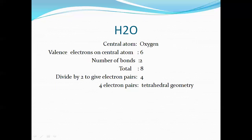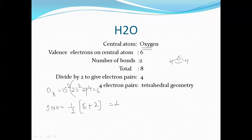When we come to the water molecule, the central atom is oxygen. Applying the formula: oxygen has atomic number 8, electronic configuration 1s², 2s², 2p⁴, so the number of valence electrons is 6. The steric number is half of (6 + 2) = 4, since water has 2 hydrogen atoms attached. Out of these 4 orbitals, 2 are bond pairs — attached to 2 hydrogen atoms — and the other 2 are lone pairs.